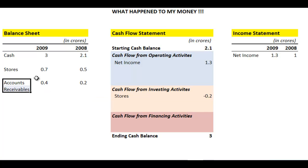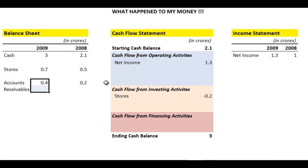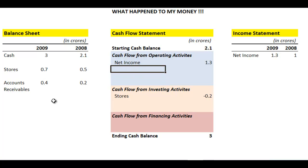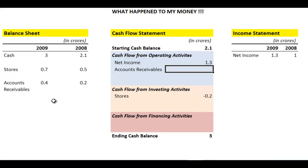Now accounts receivable — this is cash that somebody has to pay you. You've given them the product and probably recognized the revenue, so that revenue is included in net income, but you haven't received the cash yet. If you hadn't recognized that revenue, net income would have been 20 lakhs lower. Since accounts receivable went up from 20 lakhs to 40 lakhs — an increase of 20 lakhs — that is a negative 20 lakhs cash flow from operations, because accounts receivable relates to revenue which is an operating activity.